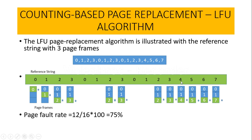The next request is for page 4, which leads to page replacement. We replace page 3 since it has the least count, loading page 4 in its place. Similarly, we replace page 4 with pages 5, 6, and 7 in turn, as each incoming page has a lower count than the others. This demonstrates how exactly we perform page replacement using the Least Frequently Used algorithm.